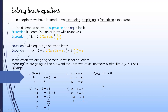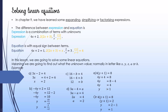For the next question, you can expand to get 4y plus 4 equal to 8. Bring the positive 4 over as minus 4, giving 4y equals 4, so y equals 1. Alternatively, you can divide both sides by 4 first to get y plus 1 equals 2, then bring over the positive 1 as minus 1, giving y equals 1. Both methods give the same answer.